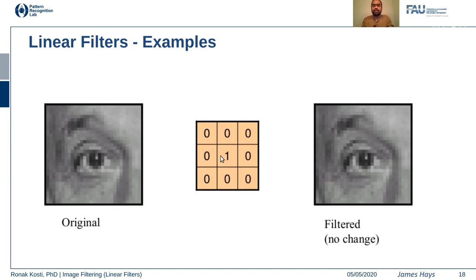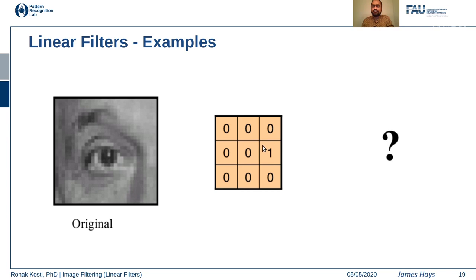Let's take a look at some examples of linear filters. An identity filter applied to an image gives back the original image. What if you have a filter with a one off-center? Think about it — when you apply the filter across the image, multiplying each pixel with the neighborhood values and summing to get the center output, the result is a shift operation. Because the one is on the right side of the filter but you replace the center pixel, the image is actually shifted to the left.